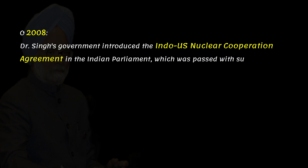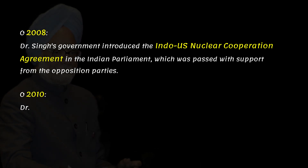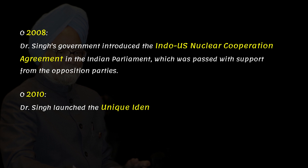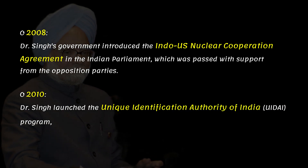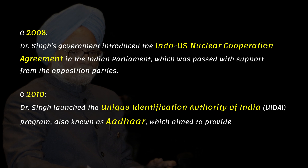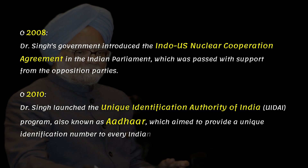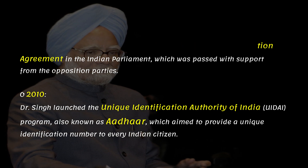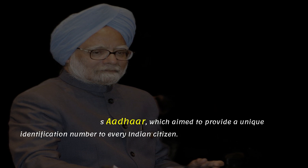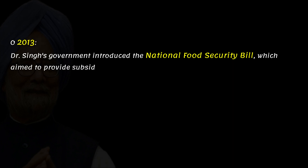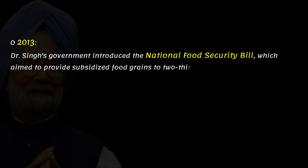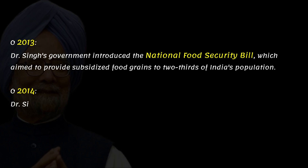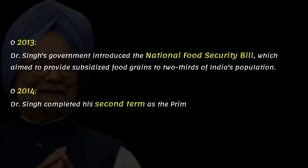In 2008, Dr. Singh's government introduced the Indo-U.S. nuclear cooperation agreement in the Indian parliament, which was passed with support from the opposition parties. In 2010, Dr. Singh launched the Unique Identification Authority of India program, also known as Aadhaar, which aimed to provide a unique identification number to every Indian citizen. In 2013, Dr. Singh's government introduced the National Food Security Bill, which aimed to provide subsidized food grains to two-thirds of India's population.